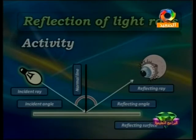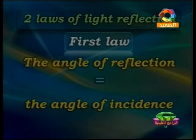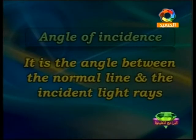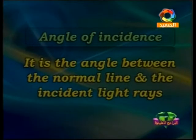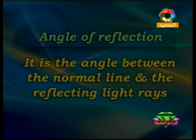So the first law of reflection states: the angle of reflection equals the angle of incidence. The angle of incidence is the angle between the normal line and the incident light ray. The angle of reflection is the angle between the normal line and the reflected light ray.